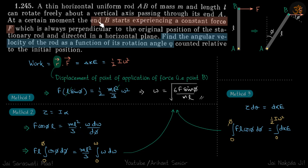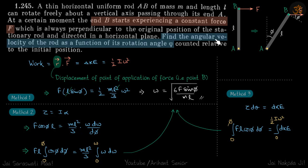We have a rod AB and end B starts experiencing a constant force F — same in its magnitude and direction — applied to point B. Find the angular velocity of the rod as a function of its rotating angle Phi. Initially the rod is in its starting position, and when it turns by an angle Phi, we need to find what the angular velocity will be.